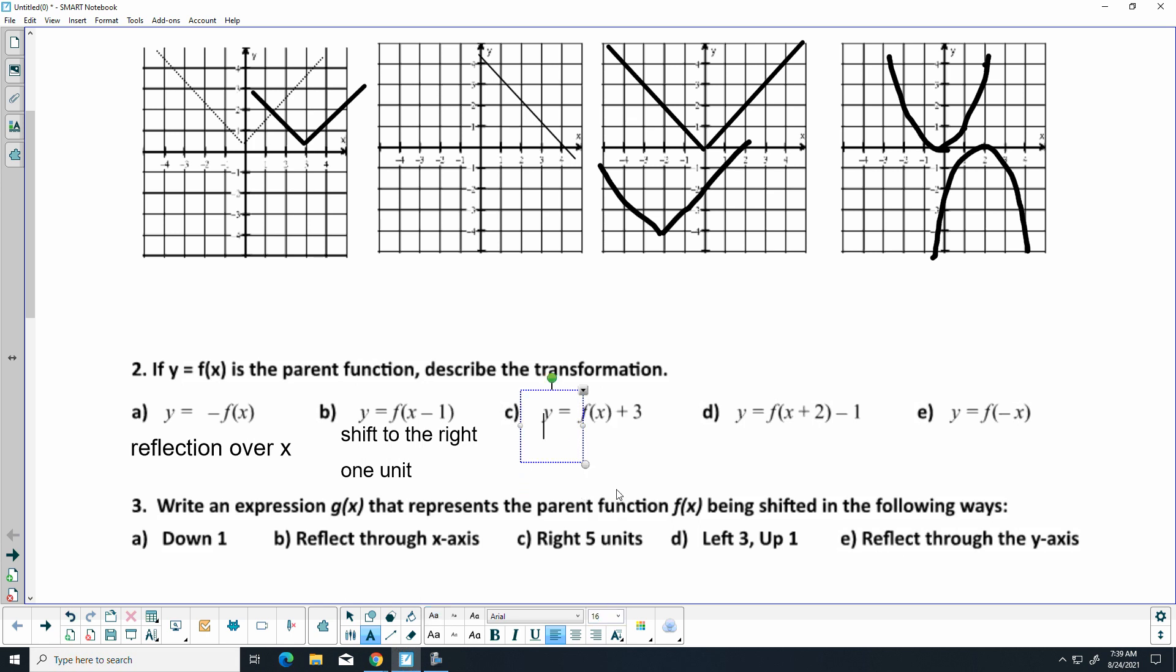C, you're adding it outside. You're really adding it to the Y value, so that is going to be a shift up 3 units. D is going to be, that's a plus 2, so that is going to be left 2, down 1.